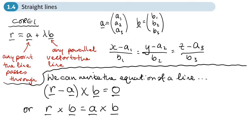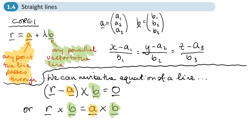The a and b are exactly the same as before. A is any point that the line passes through, and b is any parallel vector. So we pick those points out in the same way, and then we can insert them into this new equation of a line.